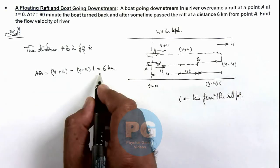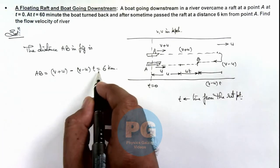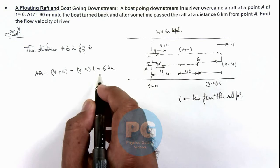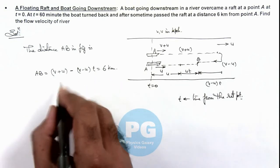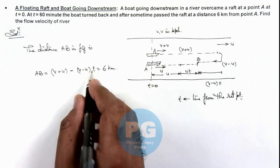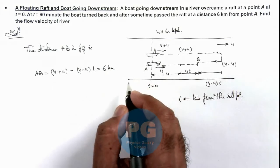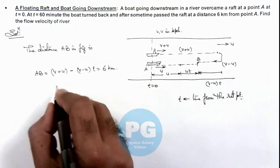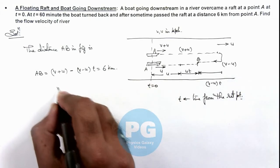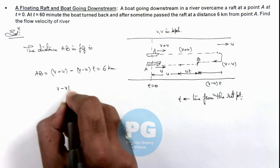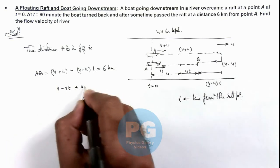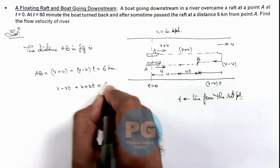This will give us t, the time in which it will overtake. We can write this as: v minus vt plus u plus ut equals 6 kilometers.